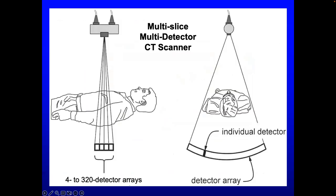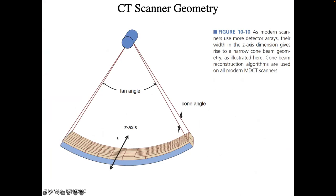Multi-detector CT is conceptually simple: you stack detector rows so that instead of a 1D detector with a fan angle, you now have a 2D detector with both a fan angle and a cone angle. There are some artifacts associated with a wide detector because beams emerge at different angles depending on source position. Sixty-four rows in the z-direction is now the minimum commonly seen.